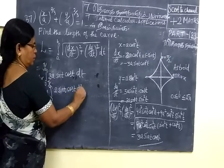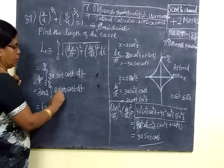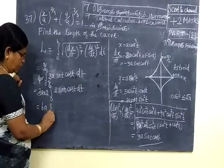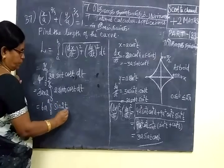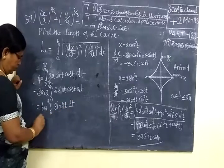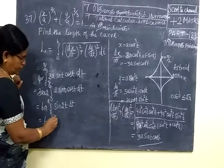dt equal to 6a, this is 2 sin a cos a, this is nothing but 2 sin a cos a, so sin 2a. So sin 2t then into dt. So equal to 6a.